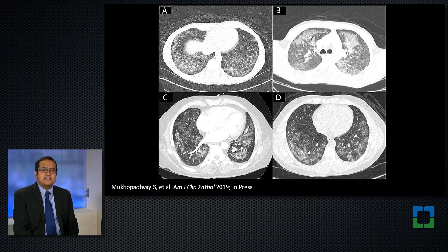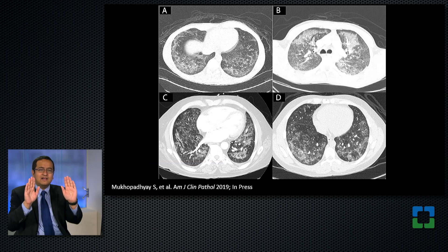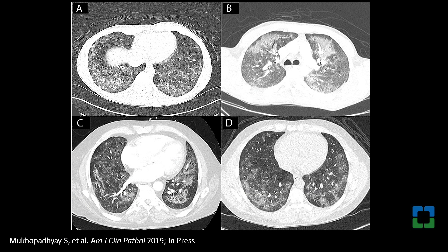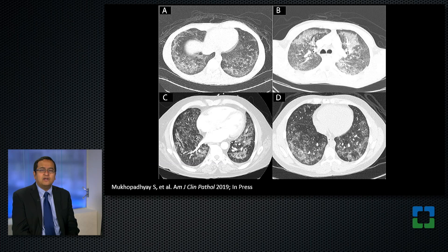The first slide shows CT scans from these patients, which are highly abnormal. Normal lungs should look black on a high-resolution CT scan since they are filled with air. Instead, each patient's scan shows bilateral lung abnormality — a haziness called ground glass opacities, and a denser abnormality in some areas called consolidation. This is consistent with what's been reported in the recent literature: patients with vaping-associated pulmonary illness have bilateral ground glass opacities, and that was the case in all of our patients.